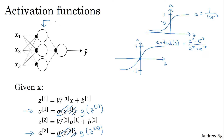For hidden units, if you let G of Z be equal to tanh of Z, this almost always works better than the sigmoid function. Because with values between plus 1 and minus 1, the mean of the activations that come out of your hidden layer are closer to having a 0 mean. Just as sometimes when you train a learning algorithm you might center the data, using tanh instead of sigmoid kind of has the effect of centering your data, so the mean is closer to 0 rather than maybe 0.5. This actually makes learning for the next layer a little bit easier.